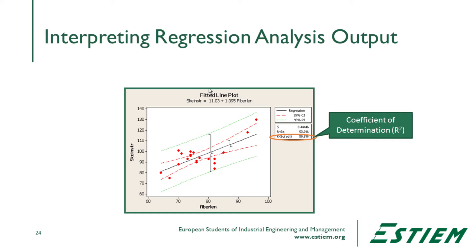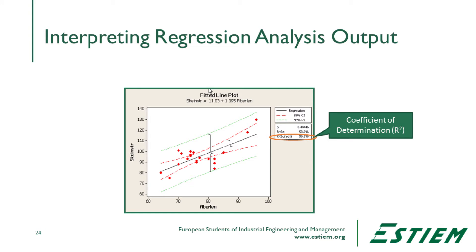We also see in Minitab the coefficient of determination, or R-squared. There are two of them: R-squared and R-squared adjusted. R-squared continues to rise as we add more terms to the equation, while R-squared adjusted maxes out when those terms are no longer adding new information about variation in the process. We use R-squared adjusted for goodness of fit. In this case it's explaining 50.6% of the data — a prediction explaining only 50% is like flipping a coin, not good enough.